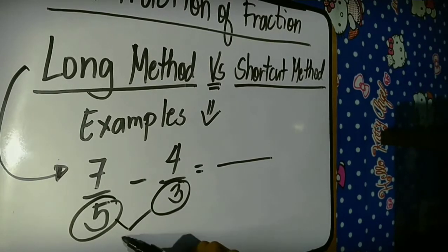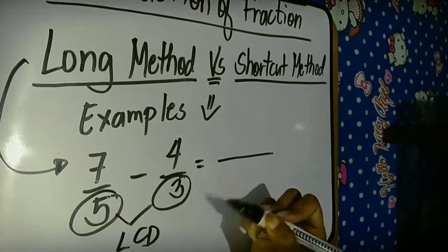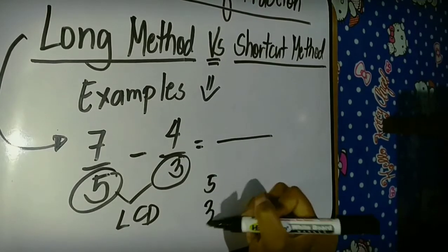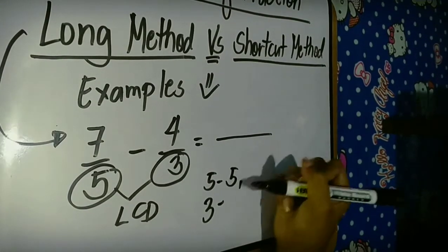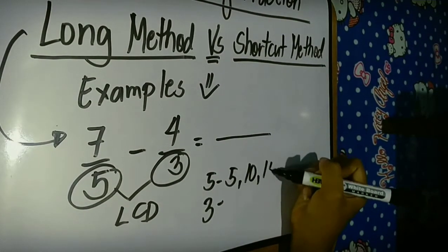As we noticed, the denominators are 5 and 3, and it is different from each other. We must find the LCD or the least common denominator.